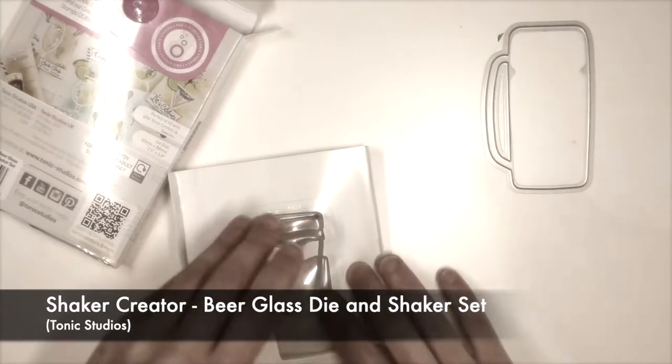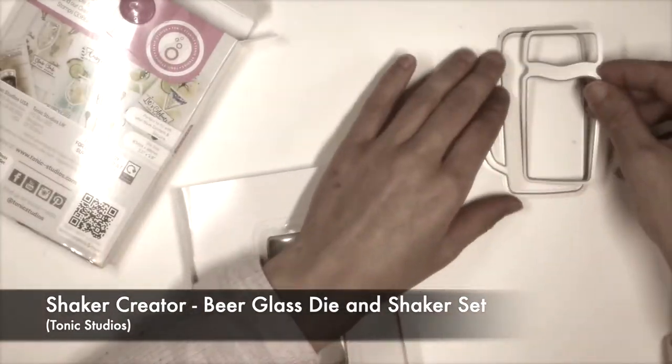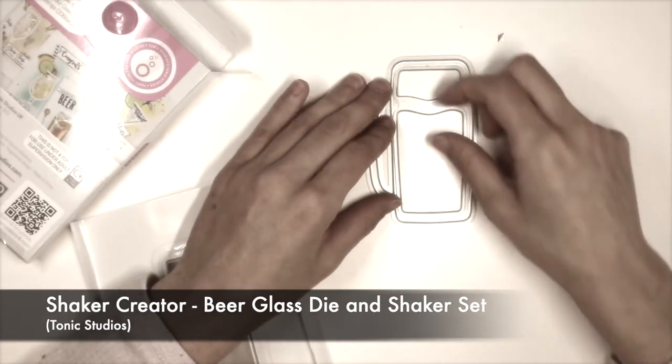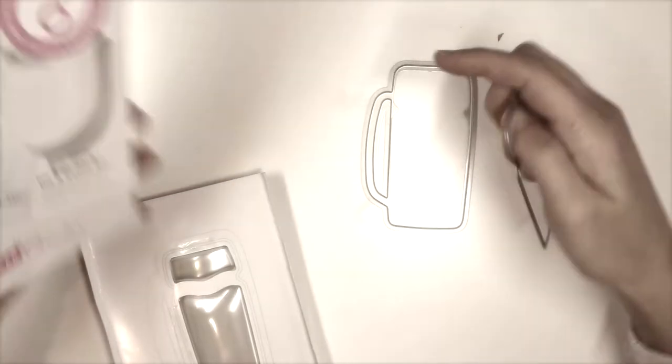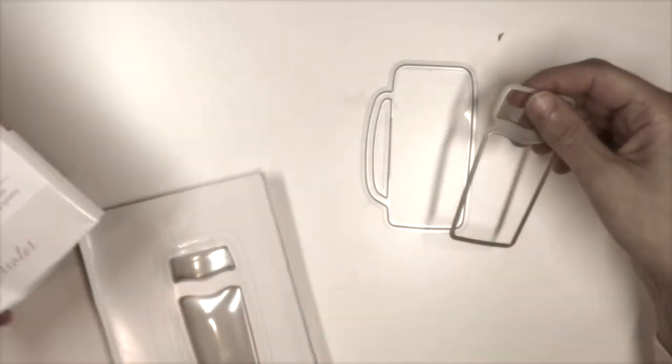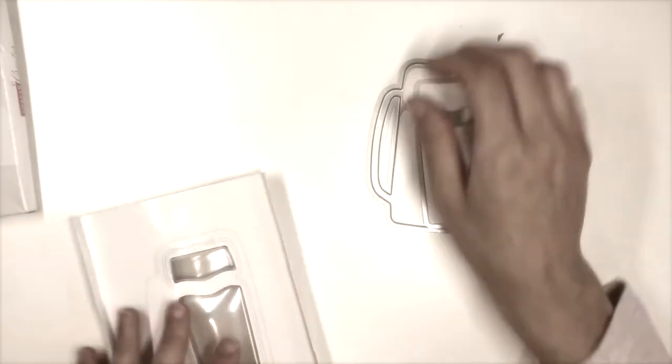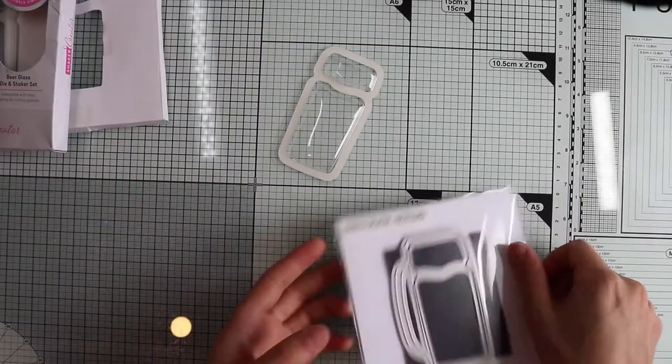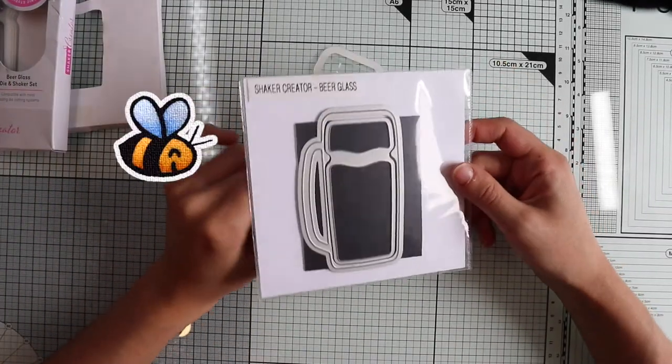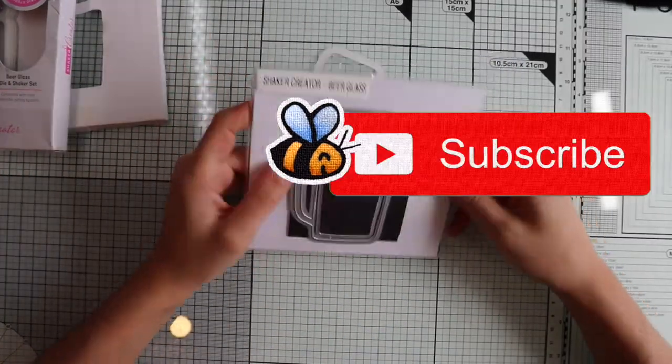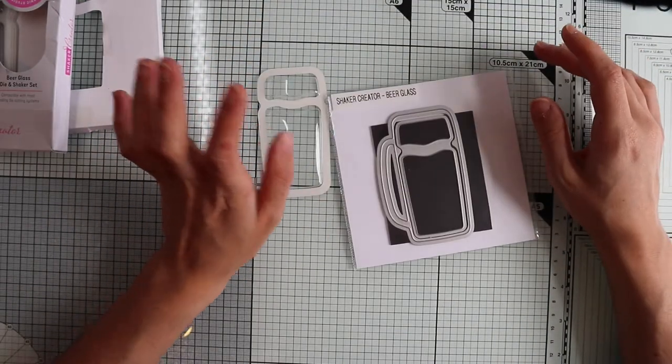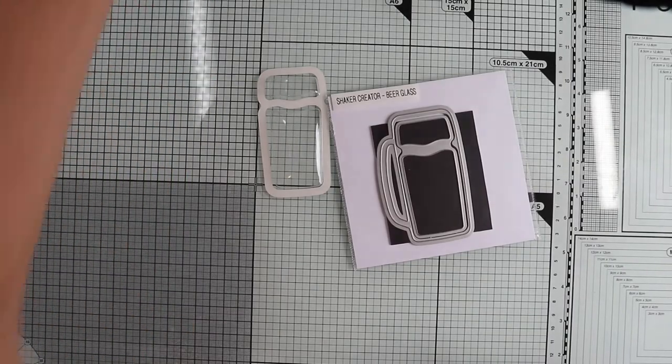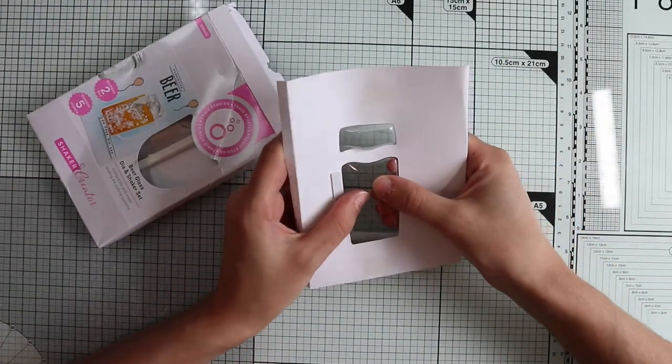They are dies that make easiest the creation of shaker cards. In fact, we get two dies, one that cut out the full shape, in this case is a glass of beer, and the other one that cut out the internal spaces, allowing us to create what will be the window of our shaker card. But the best way to explain an operation is to put it into practice.